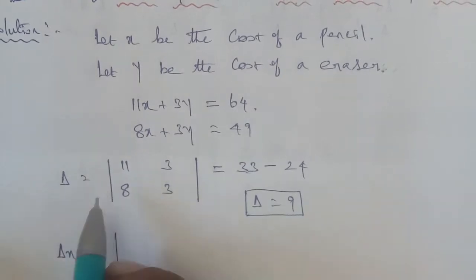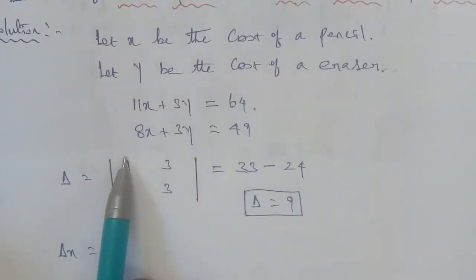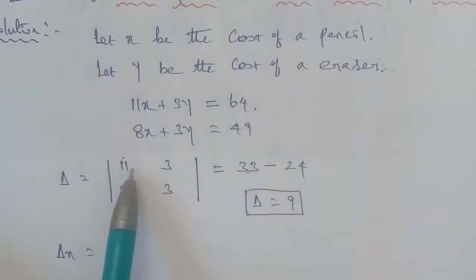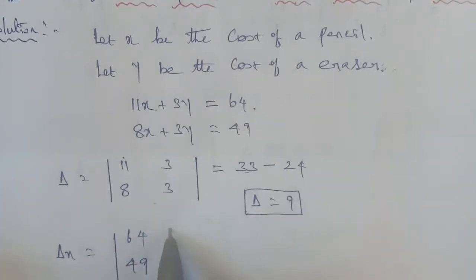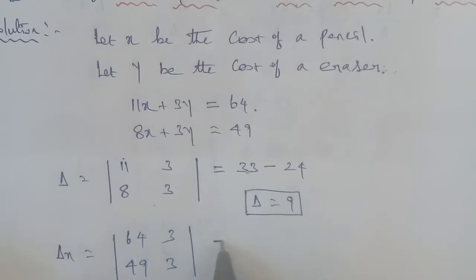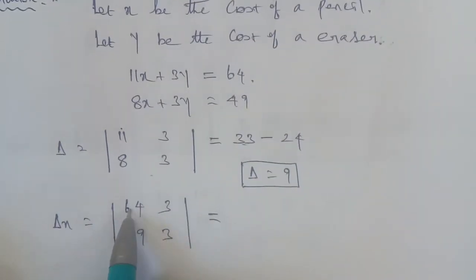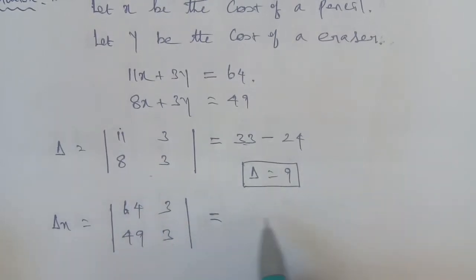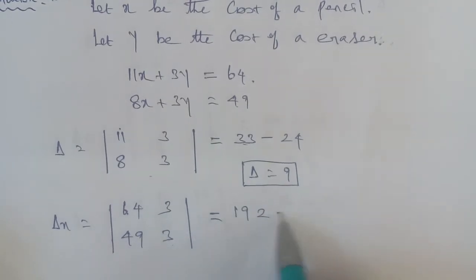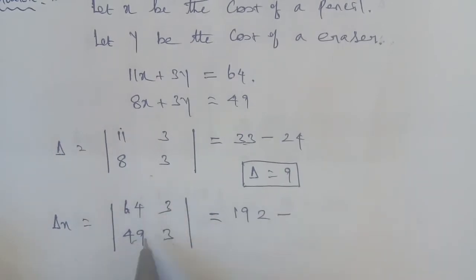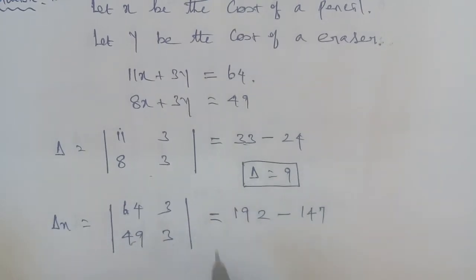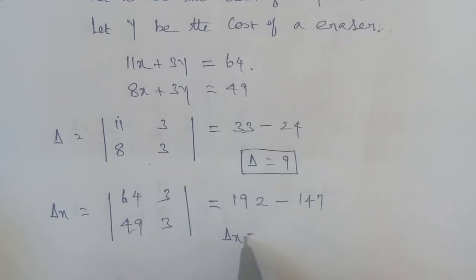Next, delta x: replace column 1 with the constants 64 and 49, keeping column 2 as 3 and 3. Applying the determinant: 64 into 3 is 192, minus 49 into 3 is 147. So delta x equals 192 minus 147, which gives delta x equal to 45.